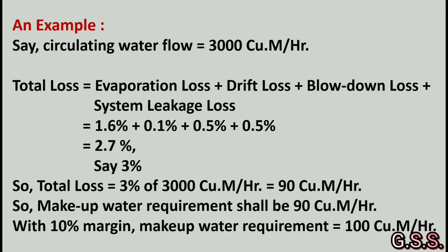Total loss equals evaporation loss plus drift loss plus blow down loss plus system leakage loss, which is 1.6% + 0.1% + 0.5% + 0.5% = 2.7%, approximated as 3%. Therefore, total loss equals 3 percent of 3000 cubic meters per hour, which equals 90 cubic meters per hour.